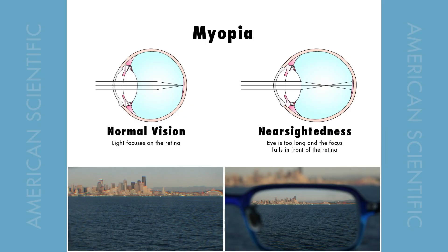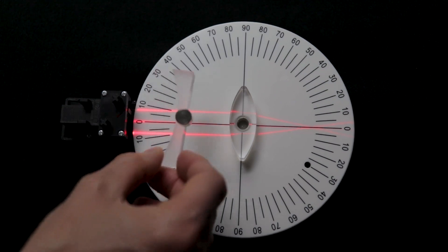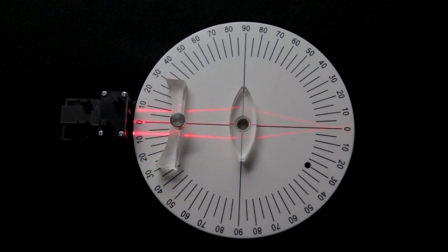Our eyes sometimes interpret light differently than others — this is due to either a differently shaped eyeball or lens. For individuals with nearsightedness the focus of light falls short and does not reach the retina. The eye interprets far away objects as fuzzy or out of focus; this condition is also referred to as myopia. To correct the lack of focus at the retina a concave lens can be used. To demonstrate this, place the plano concave lens in front of the biconvex lens. What sort of changes do you notice?